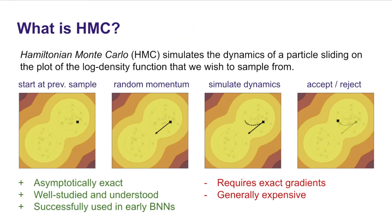So what is HMC and how do we know if it's doing a good job? Hamiltonian Monte Carlo simulates the dynamics of a particle sliding on the plot of the log density function that we wish to sample from. It's inspired by analogies with physics. It's asymptotically exact, extremely well studied and understood, and it's been highly successfully used in early work on Bayesian neural nets — Radford Neal, in particular, has looked very closely into using HMC with neural networks. Unfortunately, it requires exact gradients and is generally very expensive, requiring full batches.